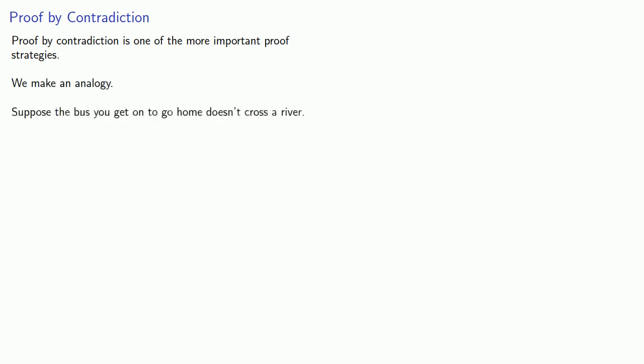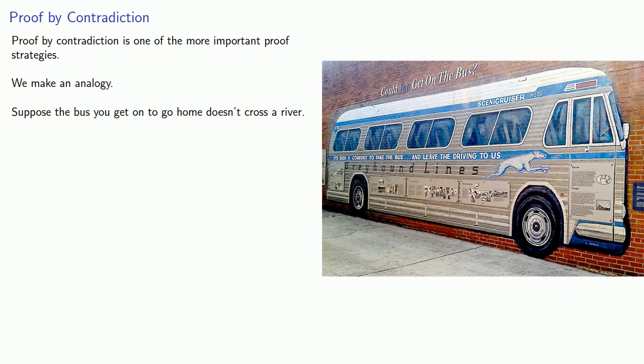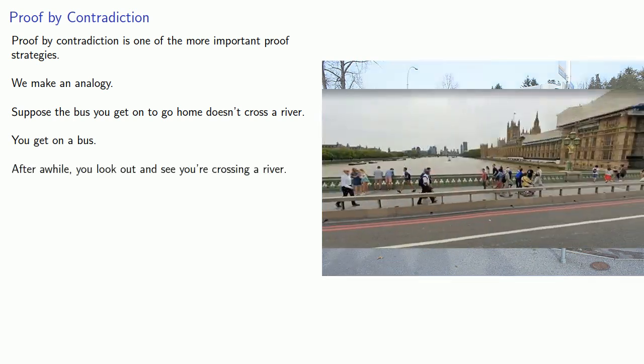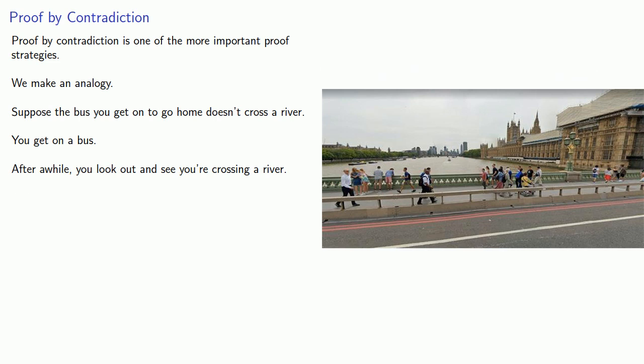Proof by Contradiction is one of the more important proof strategies. We make an analogy. Suppose the bus you get on to go home does not cross a river. You get on a bus, and after a while you look out and see you're crossing a river. Based on this observation, you can conclude you shouldn't have gotten on the bus — or at the very least, this is not the bus you should have gotten on if you want to go home.